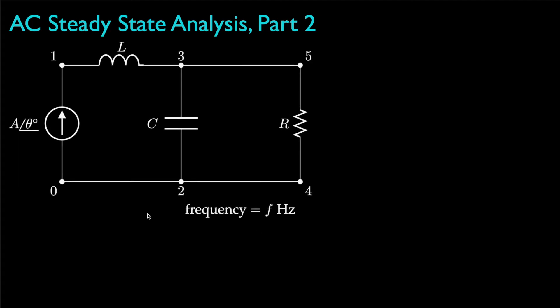To continue our analysis of AC steady state circuits, let's look at the circuit with an inductor, a capacitor, a resistor, and a current source with an amplitude A, a phase theta degrees, and a frequency of f Hertz.